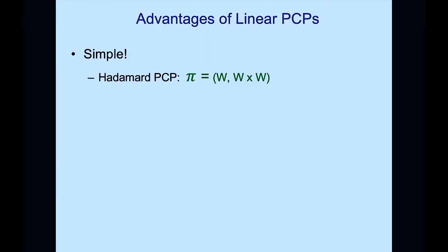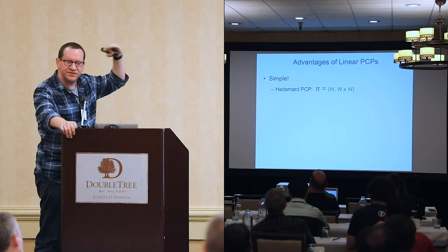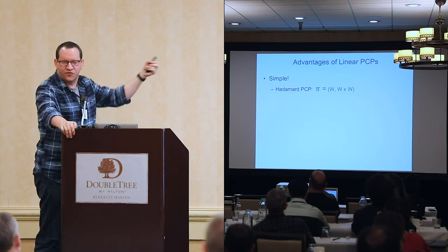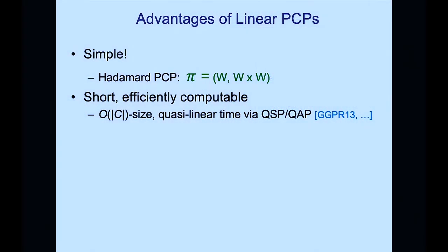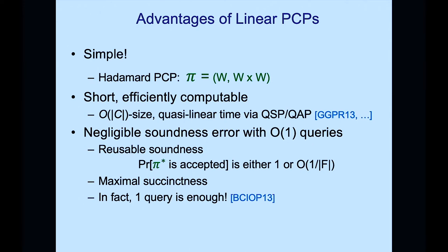Allowing linear queries has multiple advantages. First, simplicity: an NP linear PCP with just three or four queries is possible — the so-called 'Hadamard PCP.' We can get short, efficiently computable linear PCPs. The breakthrough work of Gennaro, Gentry, Parno, and Raykova gave the first linear-size linear PCPs. Good soundness error of one over field size is achievable with a small number of queries. Work with Bitansky, Chiesa, Srovkin, and Paneth shows even a single query suffices, giving single-ciphertext SNARKs in the designated-verifier setting.